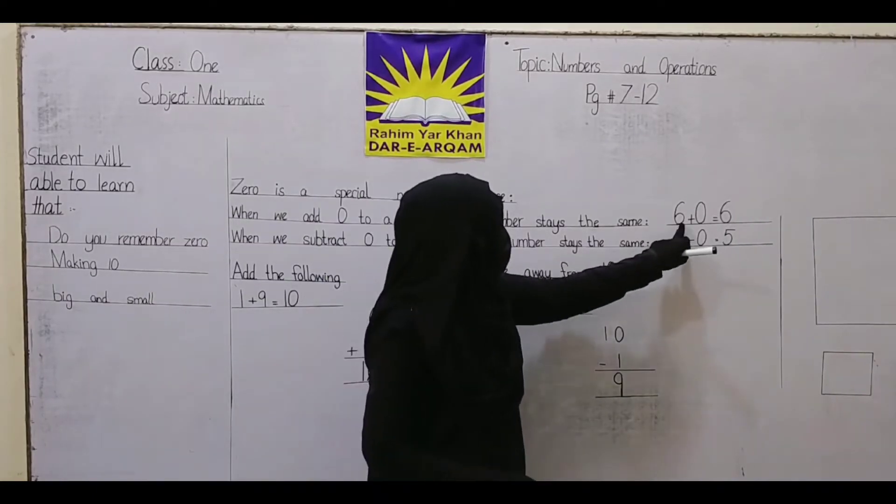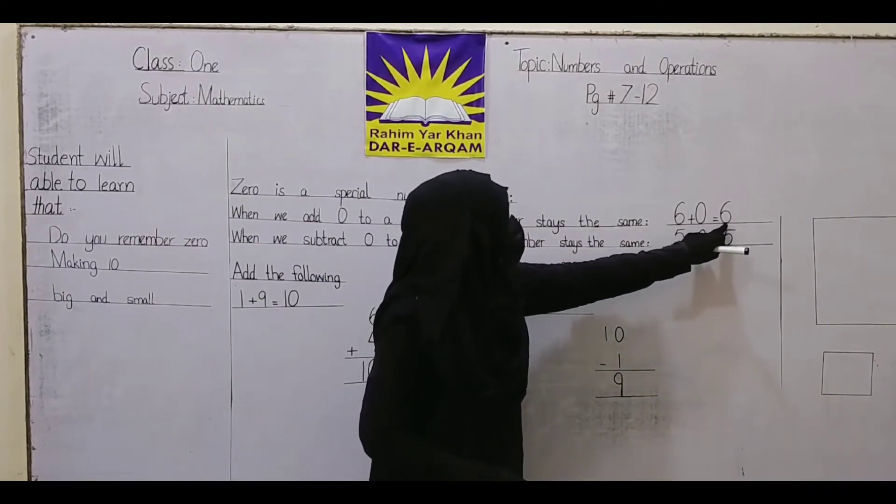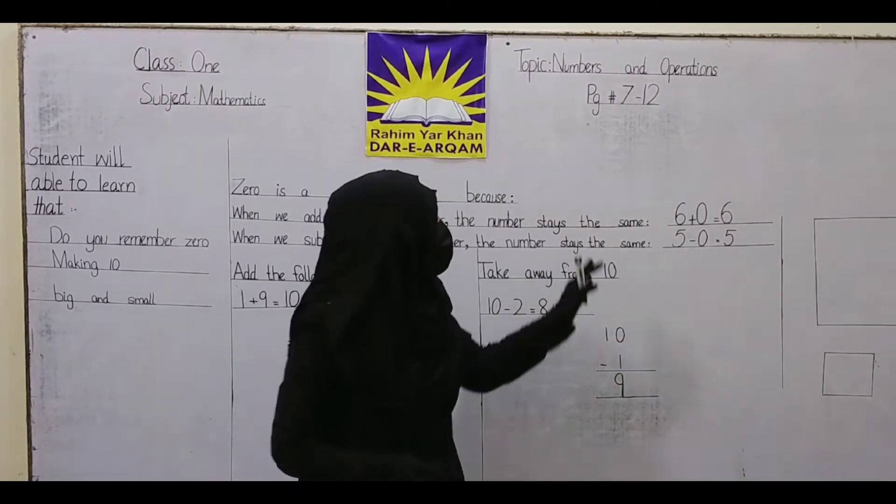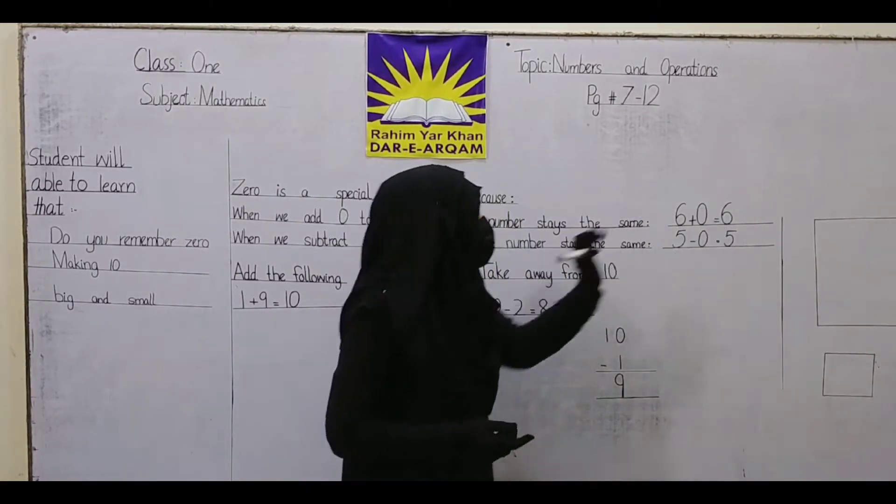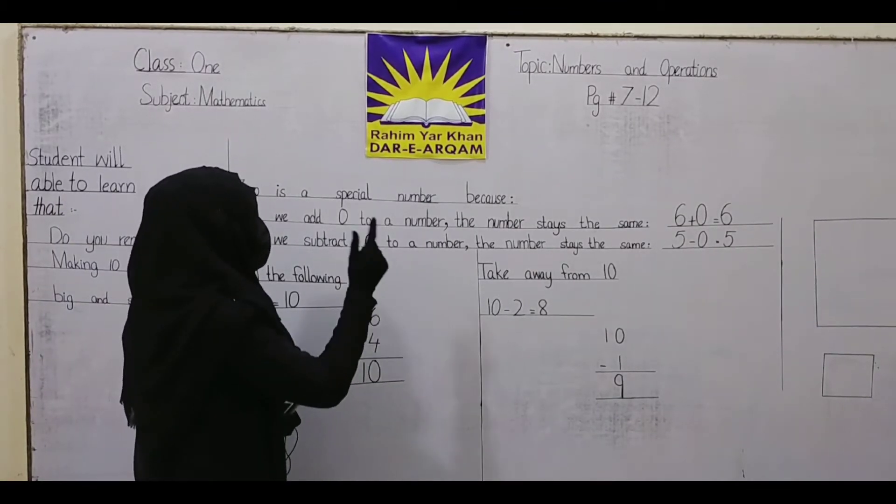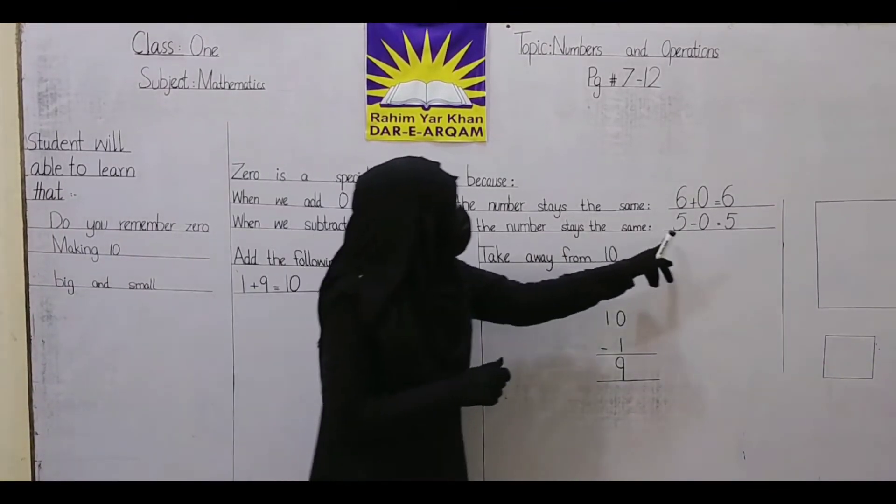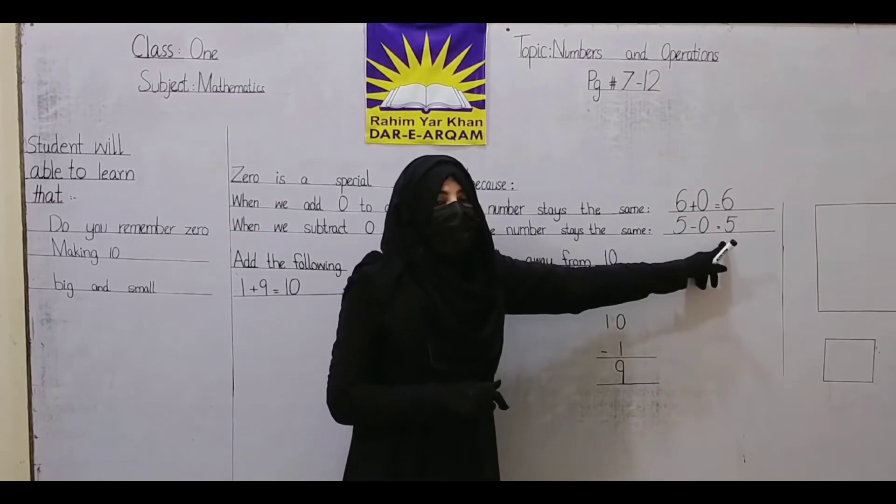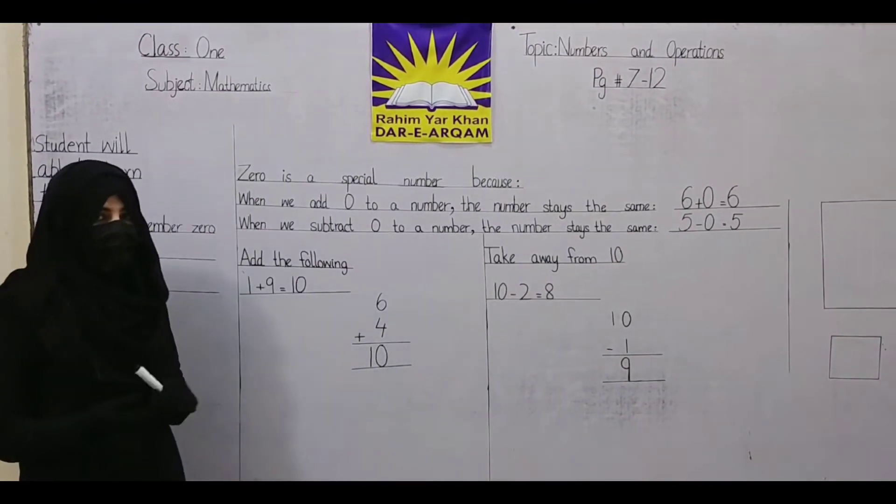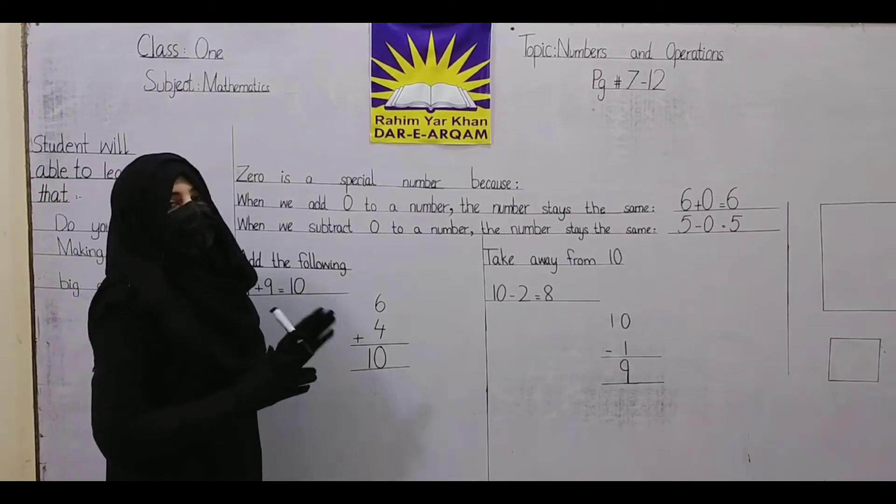6 plus 0 equals 6. This means if we add 0, the number stays the same. When we subtract 0, we get the same number. If we apply plus or minus with 0, there is no effect on the number.